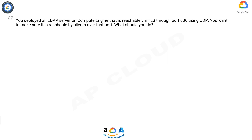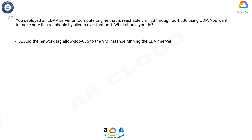You deployed an LDAP server on Compute Engine that is reachable via TLS through port 636 using UDP. You want to make sure it is reachable by clients over that port. What should you do?